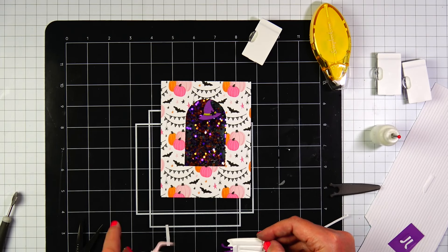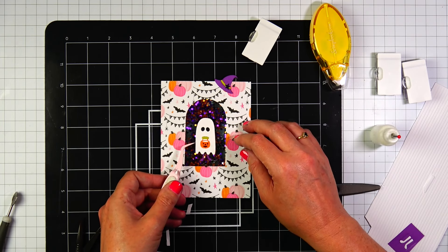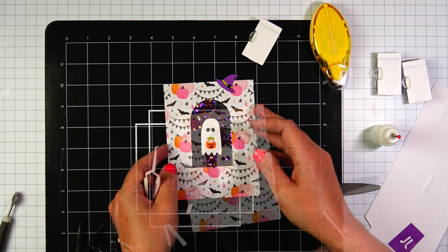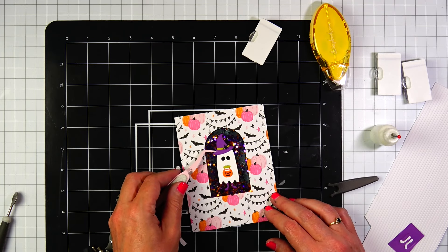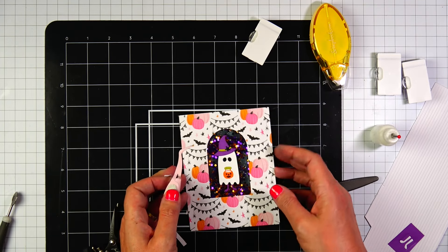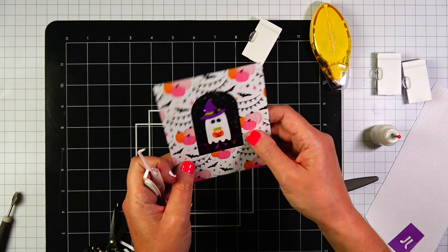I love using one millimeter foam strips. I just think it gives the perfect amount of dimension to your cards without being overly aggressive. And I already have two millimeter foam on the back side of this panel.